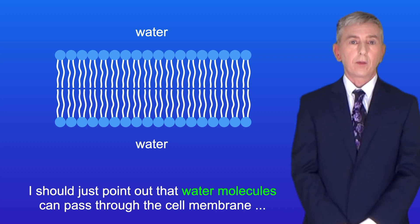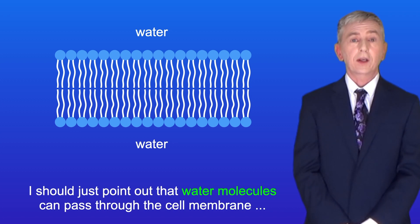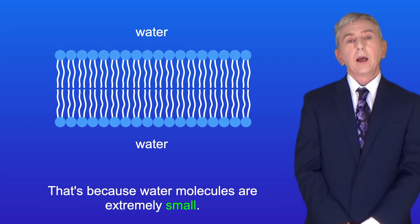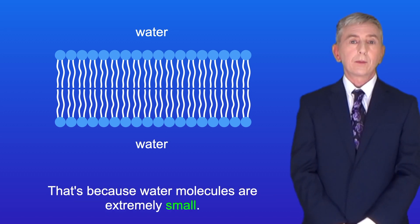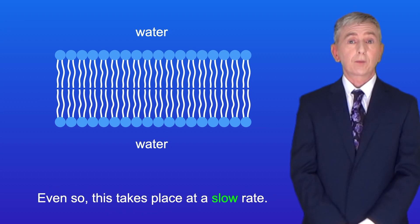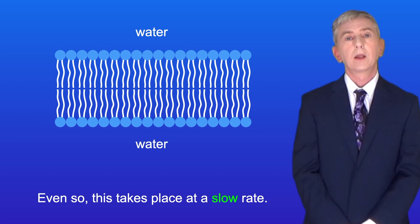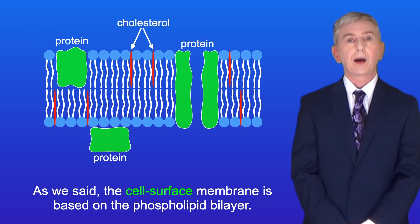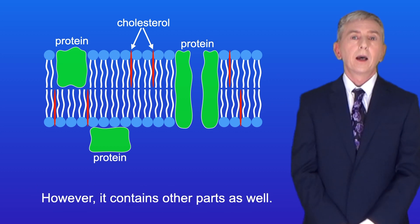Water molecules can pass through the cell membrane even though they are polar, and that's because water molecules are extremely small — even so this takes place at a slow rate. The cell surface membrane is based on the phospholipid bilayer, however it contains other parts as well.